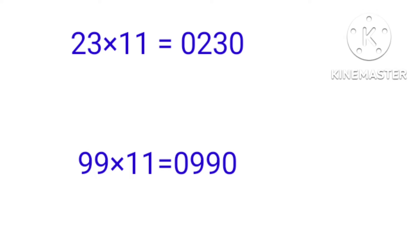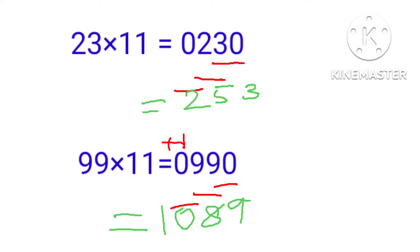The number of zeros equals 2 minus 1, that is 1. So we put one zero on the left side and one zero on the right side of the number. Now add two digits from the right side: 0 plus 3 equals 3, then 3 plus 2 equals 5, then 2 plus 0 equals 2. So the answer is 253. Similarly, 99 into 11 equals 1089.